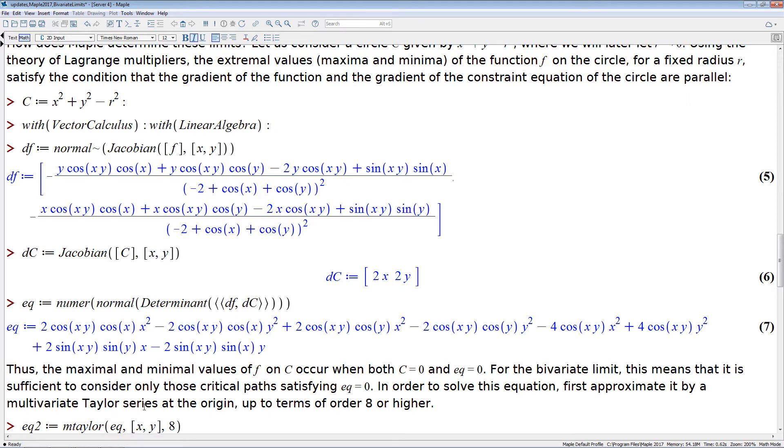Now this equation gives, we can solve that for one of the variables, x or y respectively, and it is sufficient to consider limits, which are now univariate limits, that follow the paths that are given by the solutions to those equations. We also call those paths the critical paths.